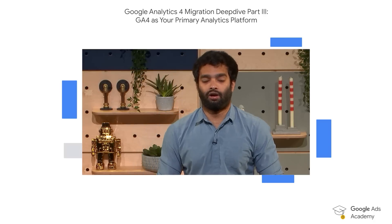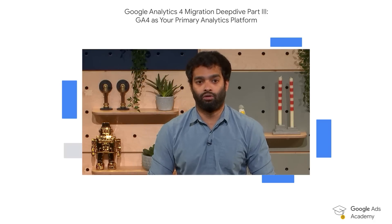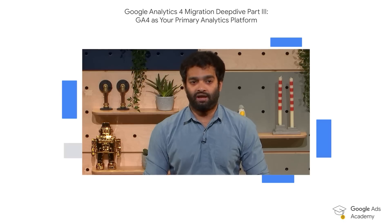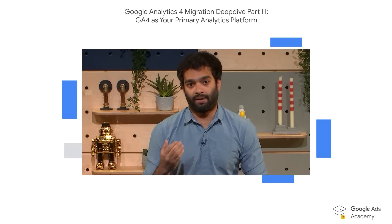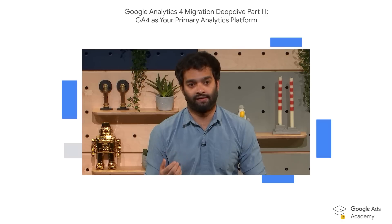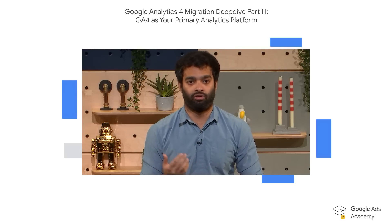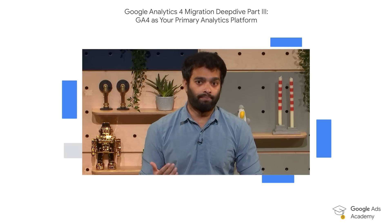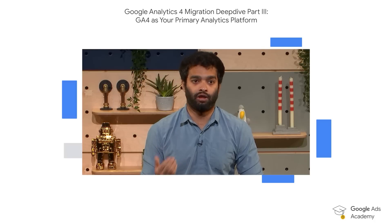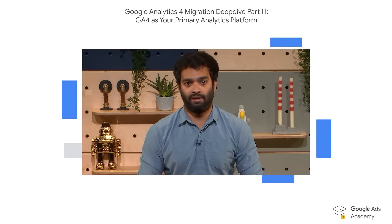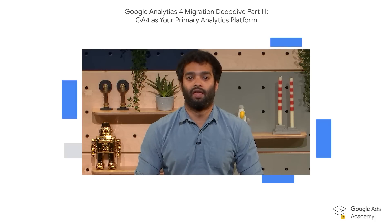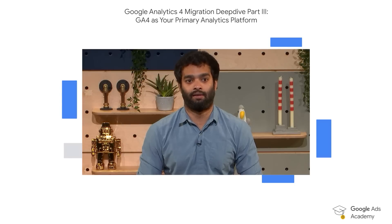With that, we have come to the end of the fourth and final module on this Ads Academy series on privacy-focused measurement. To recap, we have covered some of the best practices when it comes to replacing the old conversion actions and audiences set up in Universal Analytics with new conversion actions and audiences set up in GA4, and how we can tap into the net new value adds that GA4 offers to meet our marketing objectives. We hope you found this session useful, and we look forward to seeing you at another one of our Ads Academy series. Thank you and all the very best.